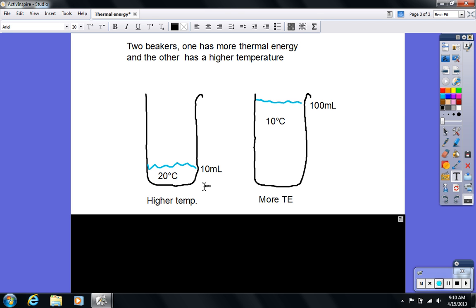it would be like Beaker A here has $200, 20 times 10, whereas Beaker B has $1,000, 10 times 100. So even though the average is less, meaning a lower temperature, it actually has more thermal energy.